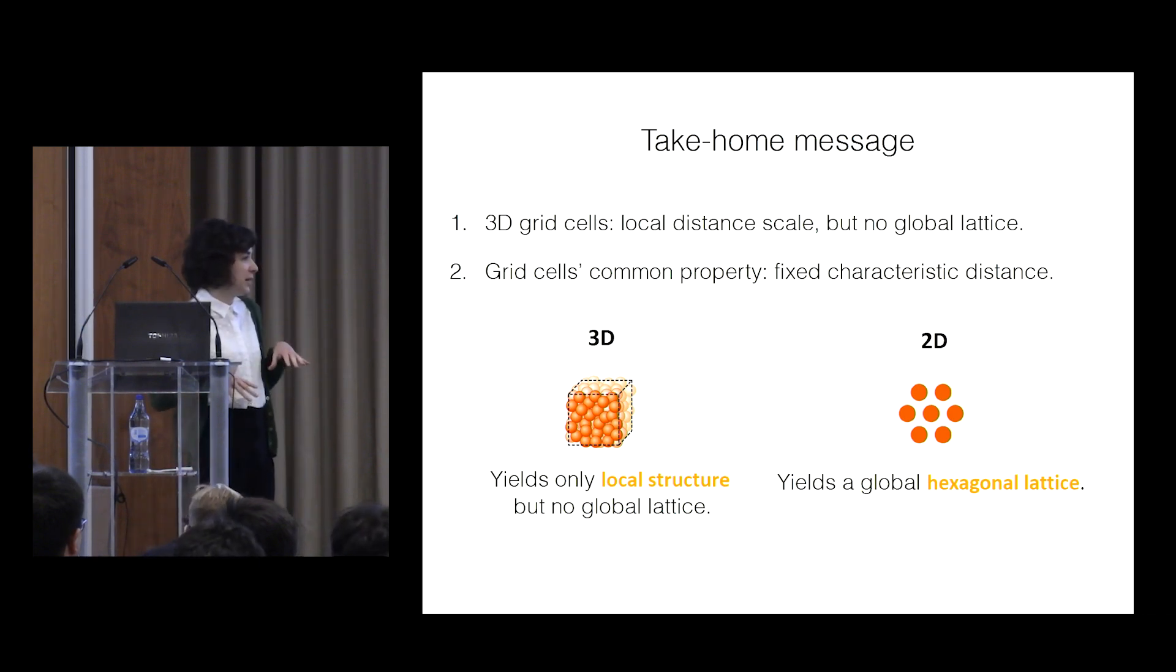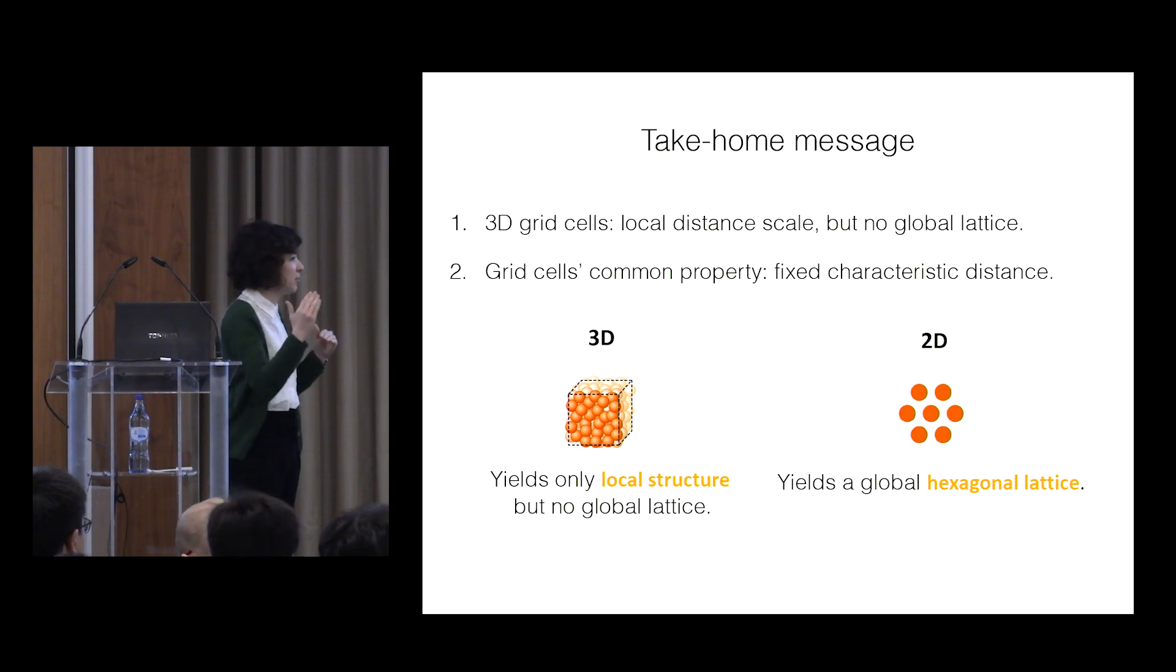I mean, it seems that when, at least in our model, when we model it in 3D, it just maintains the fixed distances between neighboring fields, and in 2D, it would do the hexagon.